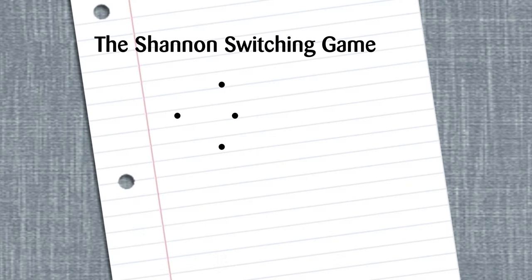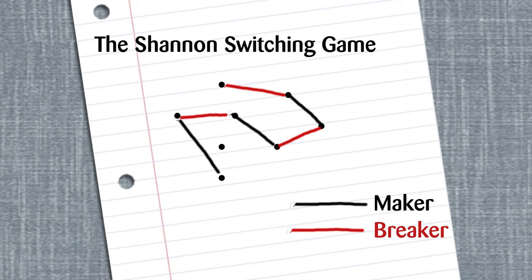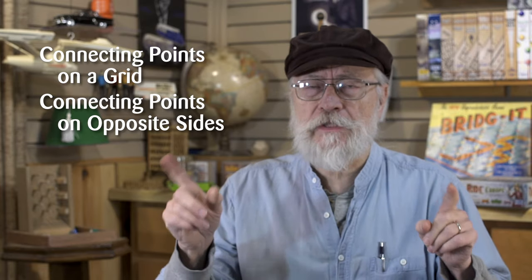The Shannon Switching Game was created sometime before 1950 by an American mathematician named Claude Shannon, who has become known as the father of information theory. In that game, a random arrangement of dots is drawn, and then one player is a maker and the other is a breaker. Two points are chosen on opposite edges, and the maker attempts to connect them by claiming lines turn by turn, while the breaker attempts to stop this by claiming connections first. Mathematicians loved working out the probabilities, and this establishes the idea of connecting points on opposite sides of the grid.